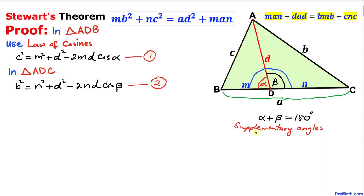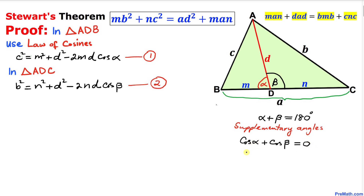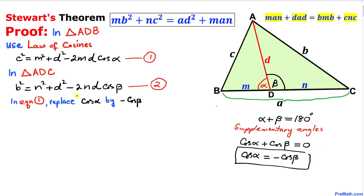Now let's focus on angles alpha and beta. Together they form a straight angle, so alpha plus beta equals 180 degrees — they are supplementary angles. This means cos(α) + cos(β) = 0. For example, if alpha is 45° then beta is 135°: cos(45°) = √2/2 and cos(135°) = −√2/2, which add to zero. Therefore cos(α) = −cos(β).